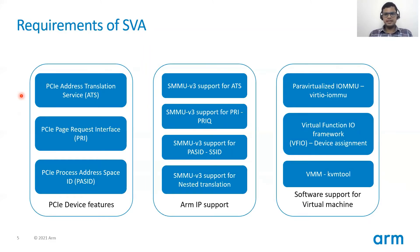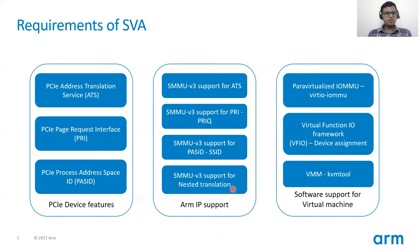The Address Translation Service or ATS allows the PCIe device to request address translation prior to initiating any DMA. The PRI allows the device to request handling of IO page faults, while the PASID or the Process Address Space ID, in addition to the requester ID of a PCIe device, allows tagging the transactions coming from various virtual machines so that the SMMU can identify different translation page tables. The ARM IOMMU such as SMMU v3 supports all these PCIe protocols along with support for nested translation, which enables the guest operating system to allow DMA remapping capabilities for any devices assigned to it.